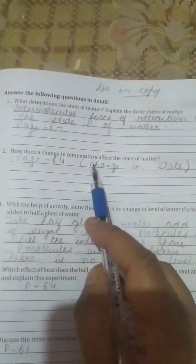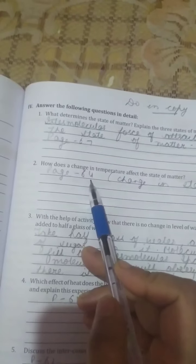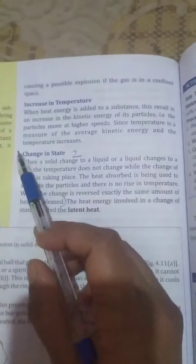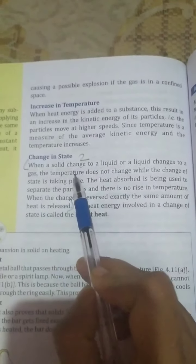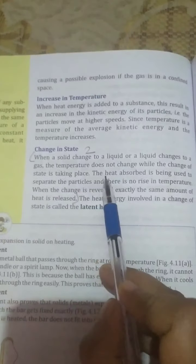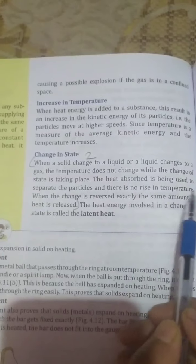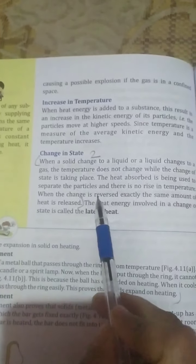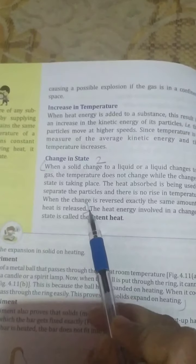Second, how does the change in temperature affect the state of matter? For this, open page number 64. You have to write: when a solid changes to a liquid or liquid changes to a gas, the temperature does not change while the change of state is taking place. The heat absorbed is being used to separate the particles and there is no rise in temperature. When the change is reversed, exactly the same amount of heat is released.